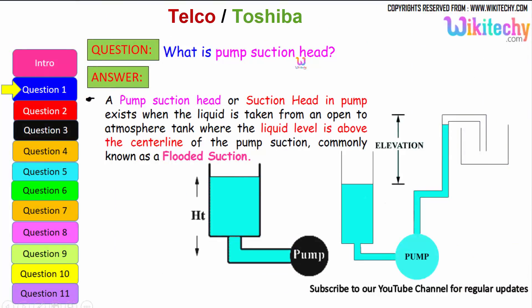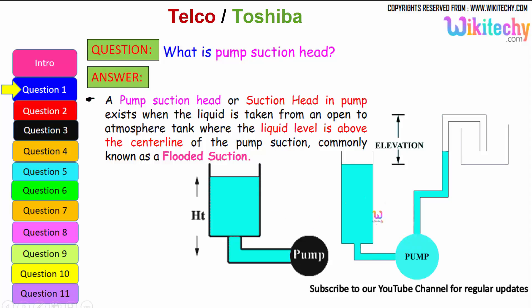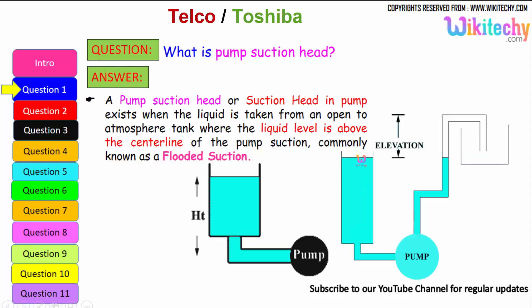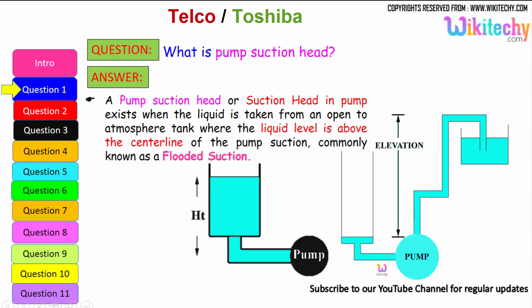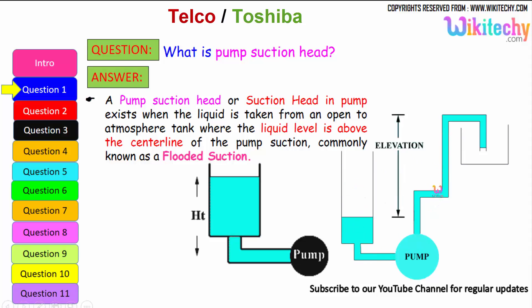What is pump suction head? A pump suction head, or suction head in a pump, exists when the liquid is taken from an open atmospheric tank where the liquid level is above the centerline of the pump suction — commonly known as flooded suction. So automatically the pump suction will try to pick the water or any liquid from one area to another based on the atmospheric pressure.